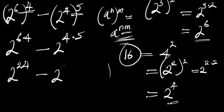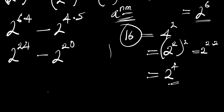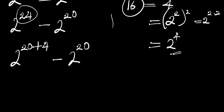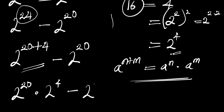The next step is to express 2^24 as 2^(20+4), and applying the identity a^(n+m) = a^n × a^m, we rewrite this as 2^20 times 2^4 minus 2^20.